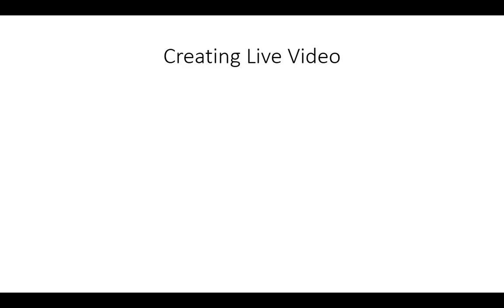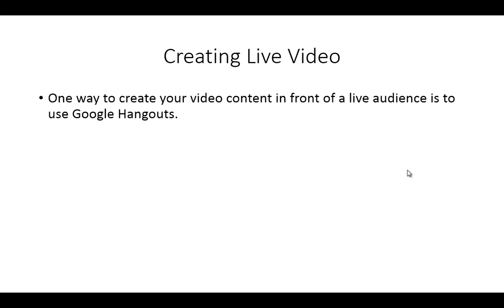Welcome back to alternative authority content. In this video we are going to be discussing creating live video as your authoritative content. This is just another way of using the video medium to communicate valuable information to your subscribers, followers, your tribe, or anyone else that will eventually become your buyer. One of the best ways to create live video or create video in front of a live audience is to use Google Hangouts.